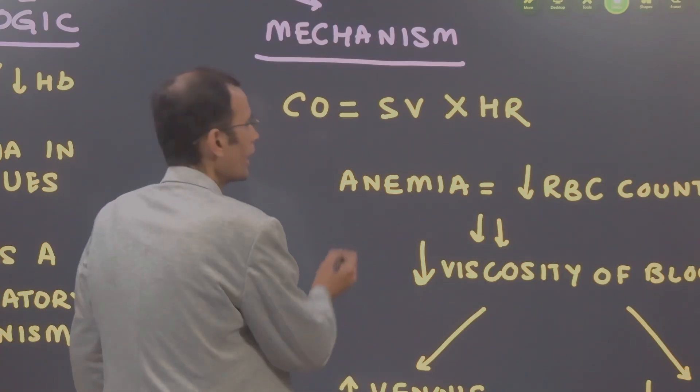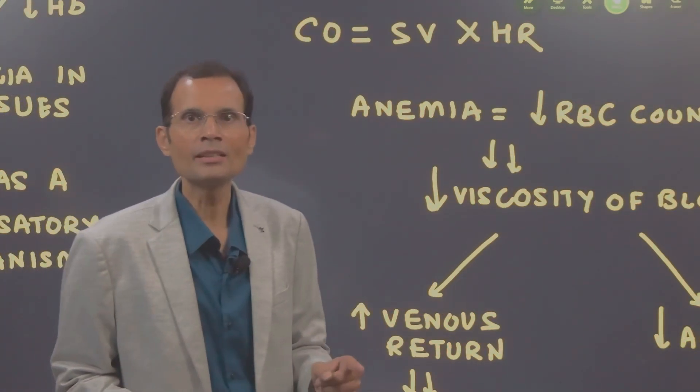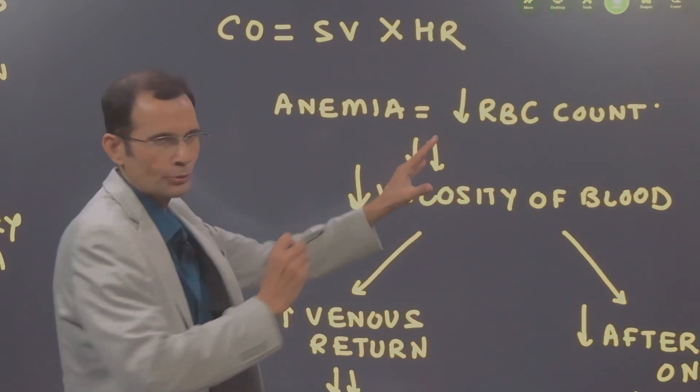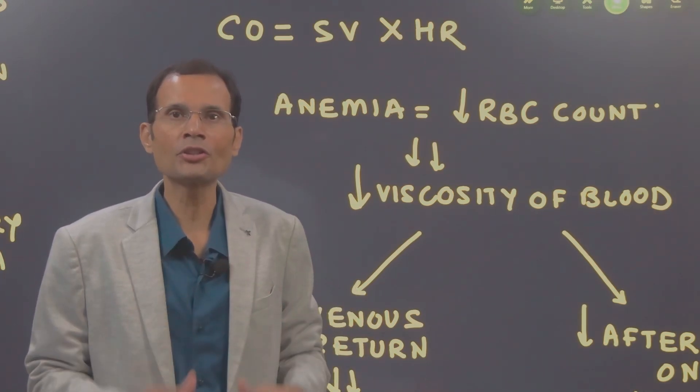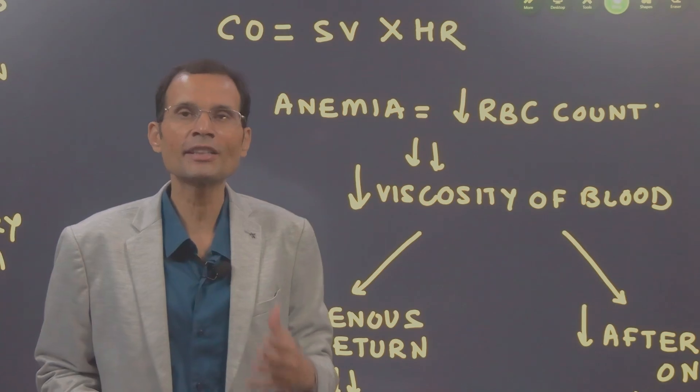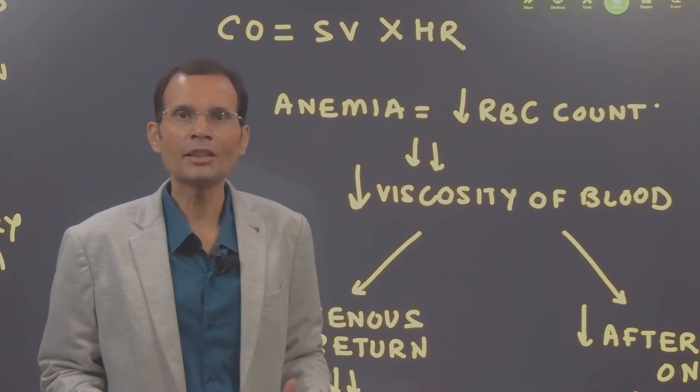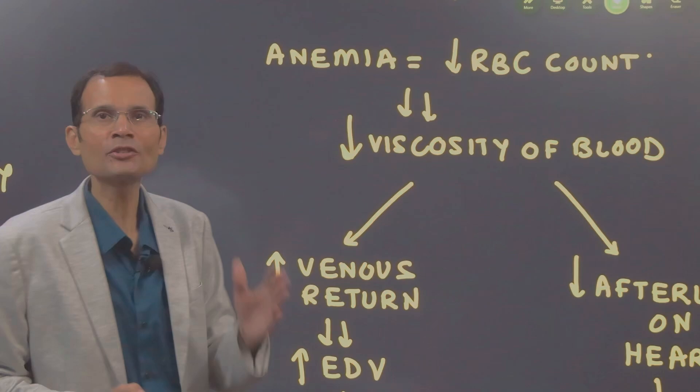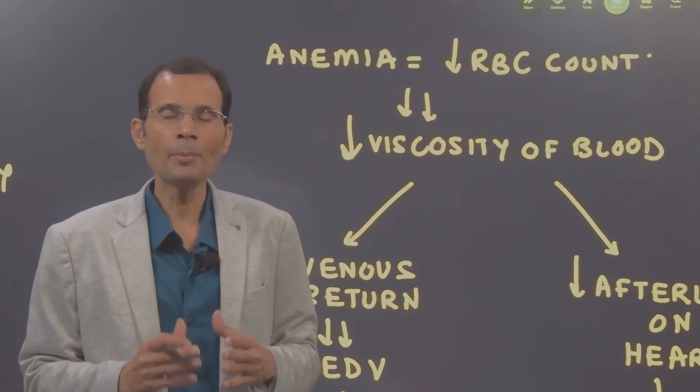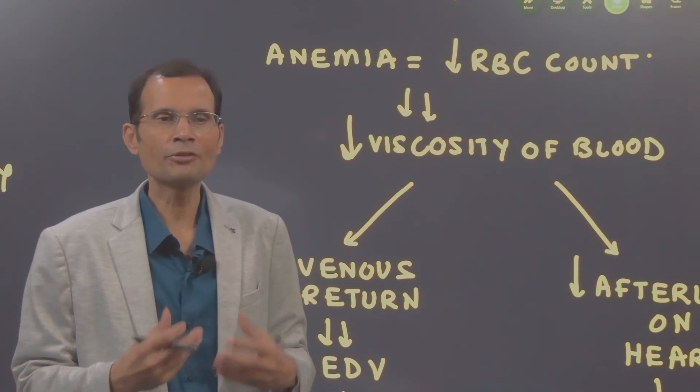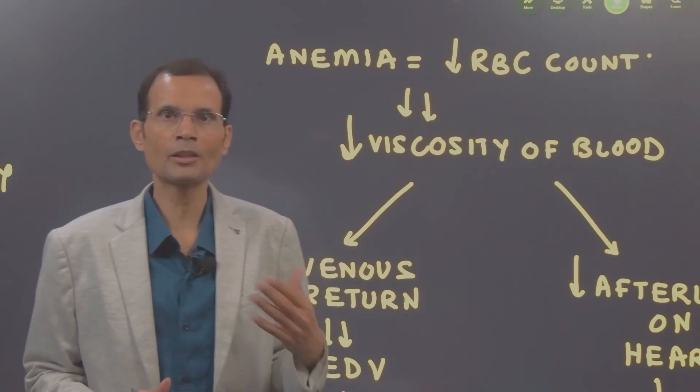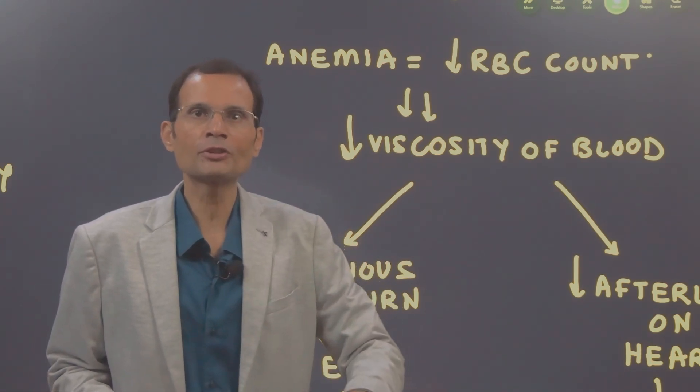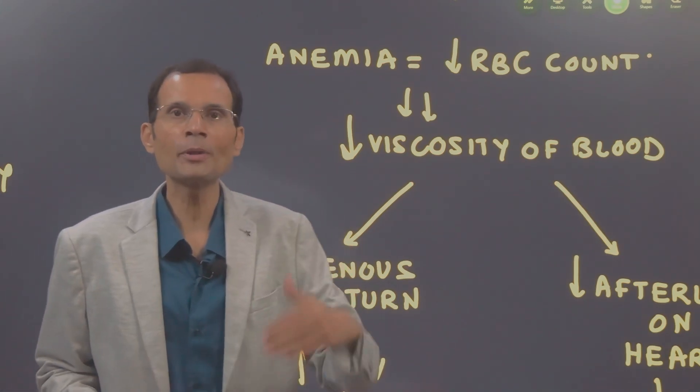First, the stroke volume. Anemia means a decreased RBC count and you know RBCs are the major contributors to the viscosity of blood. So in anemia, the viscosity of blood is going to decrease. Remember, viscosity is a viscous drag on the blood flow. It is a viscous resistance to the blood flow. So lower the viscosity, better is going to be the blood flow.